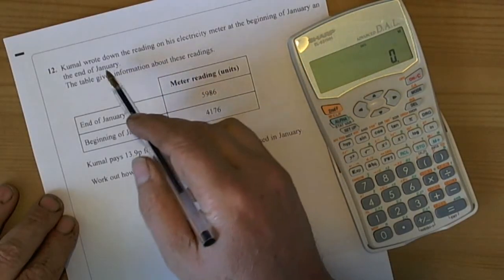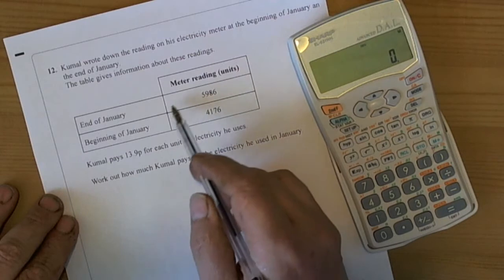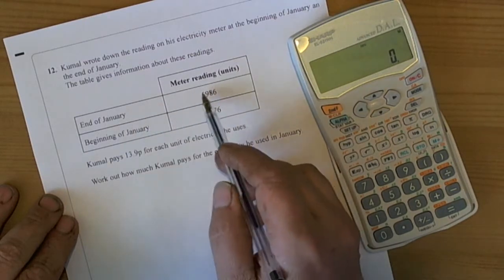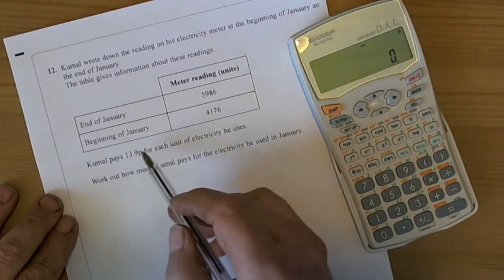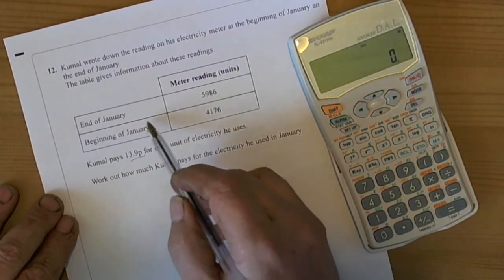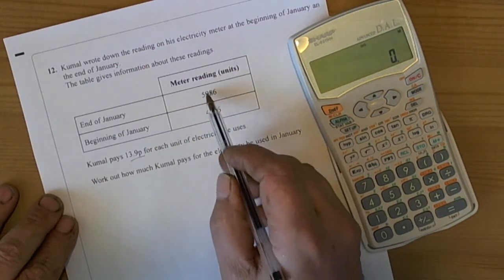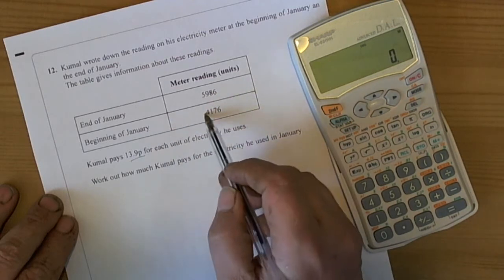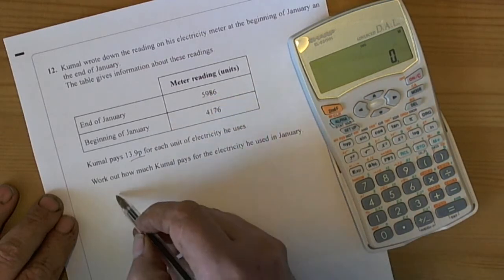This question asks us to work out an electricity bill. It has given us the end reading, the beginning reading, and the cost per unit of 13.9p. We need to work out how many units we have used by finding the difference between the two numbers.